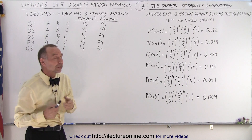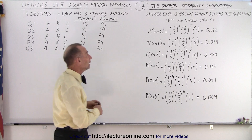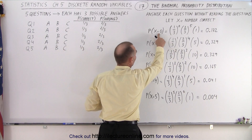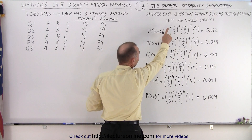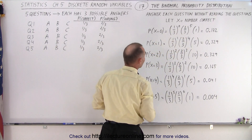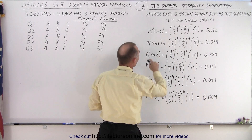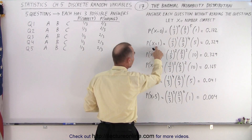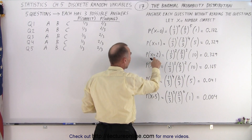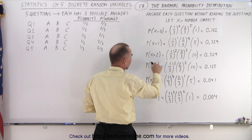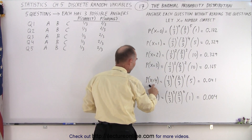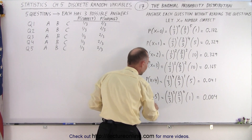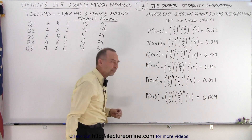So now, letting X equal the number of correct answers, what would be the probability that zero answers were correct? The probability that one answer would be correct, two answers would be correct, three answers would be correct, four answers would be correct, and five answers would be correct.